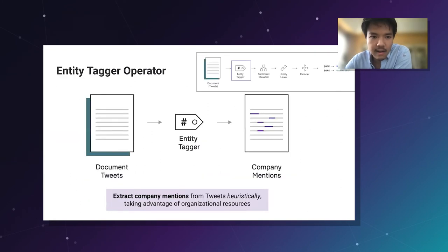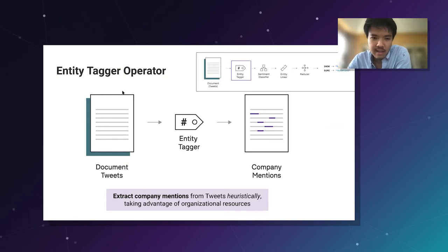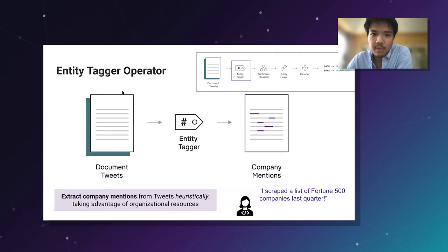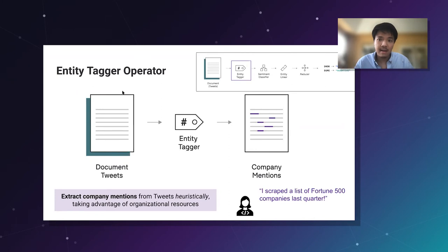Let's start with the entity tagger. We want to pull out all company mentions from our tweets. Roberto mentioned he had scraped a list of Fortune 500 companies in a previous project — why not take advantage of that? Using a fuzzy matching approach based on that list, I can include it as a heuristic operator in my pipeline and quickly get up and running without any ML at all. This lets me make progress without getting stuck or defaulting to a fancy model when it might not be necessary.